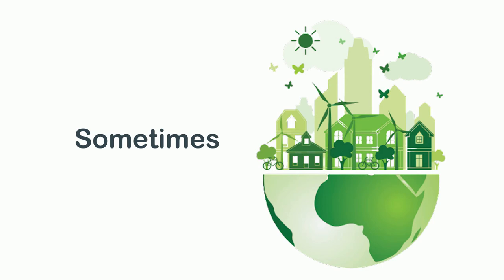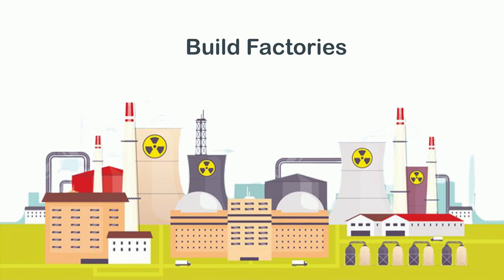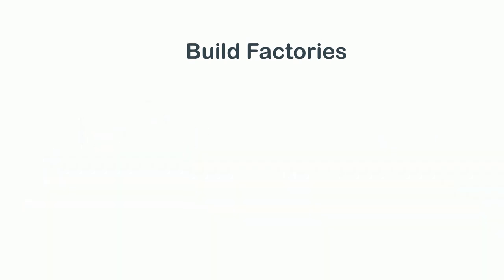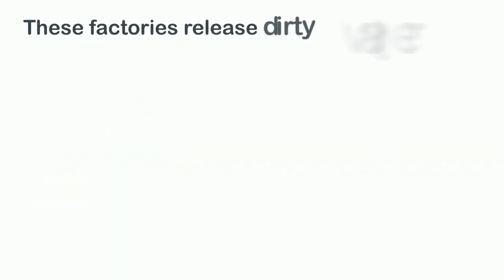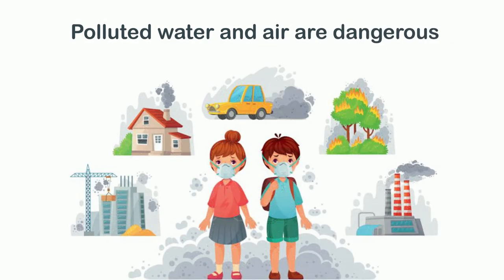Sometimes man-made environment has a bad effect on natural environment. For example, we build factories for different types of production. These factories release dirty water and smoke which pollute the water and air. Polluted water and air are dangerous for all living things, including humans themselves.